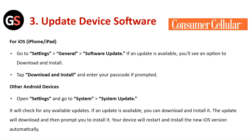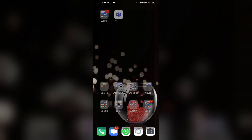Update device software. For iOS, go to Settings, then General, then Software Update. If an update is available, you will see an option to download and install. Tap on Download and Install and enter the passcode if prompted.